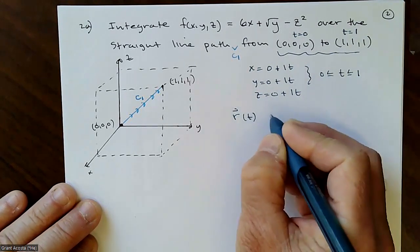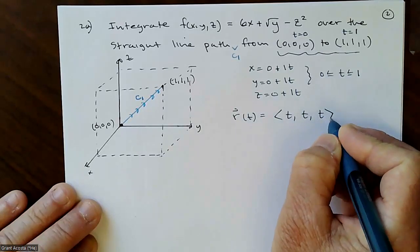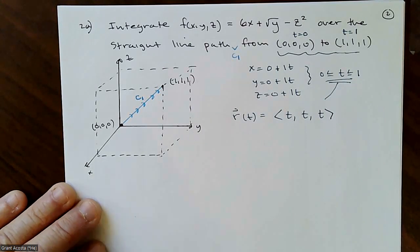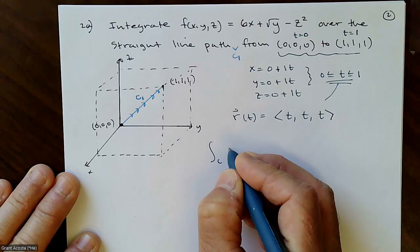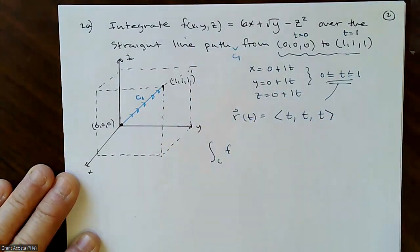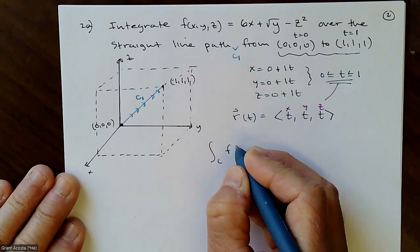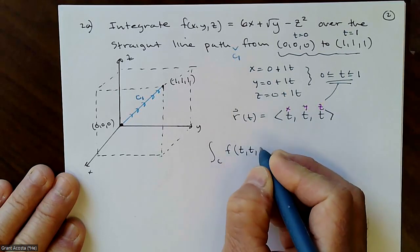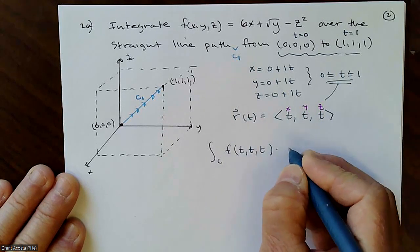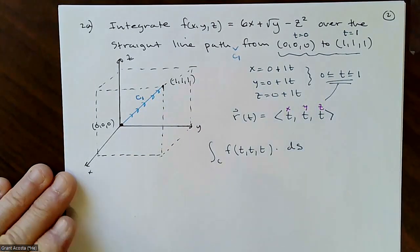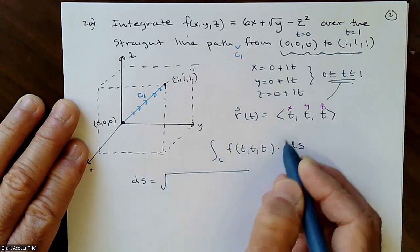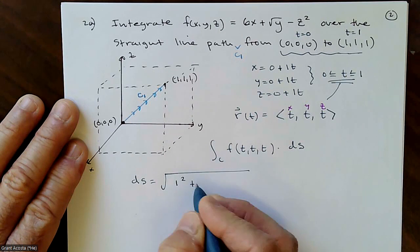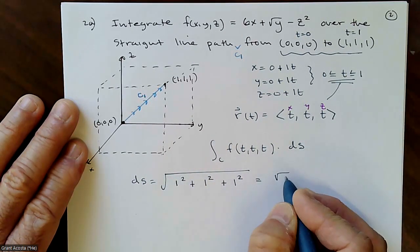As a vector-valued function, r(t) = ⟨t, t, t⟩ on [0, 1]. To integrate our function over this curve, we evaluate f(x, y, z) at x = t, y = t, z = t, then multiply by ds. Let's calculate ds: it's the square root of (dx/dt)² + (dy/dt)² + (dz/dt)² = √(1² + 1² + 1²) = √3, a constant. So we integrate (6t + √t − t²)·√3 dt from 0 to 1.